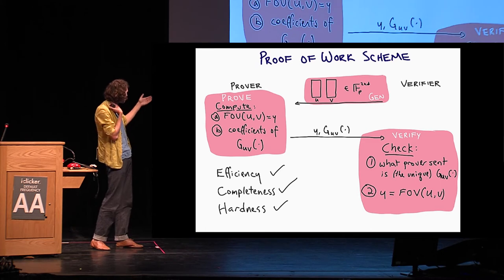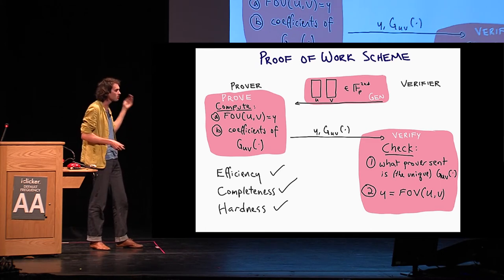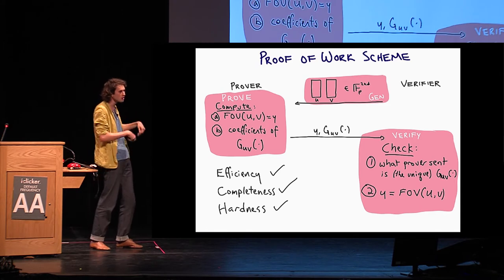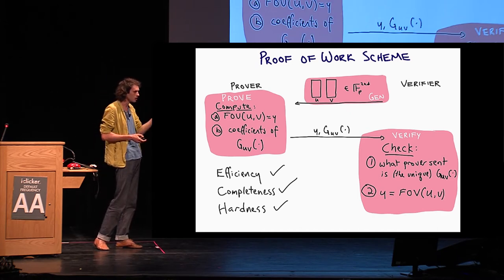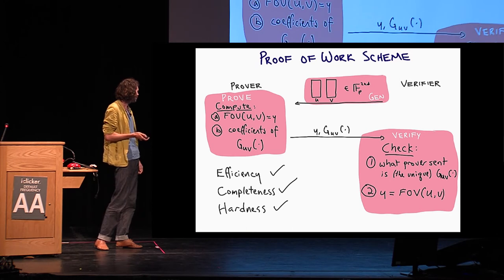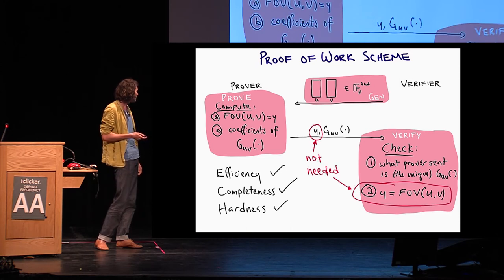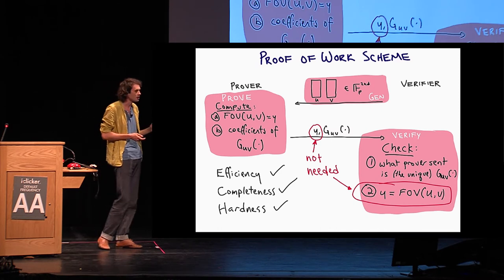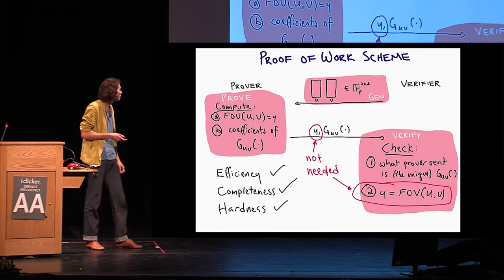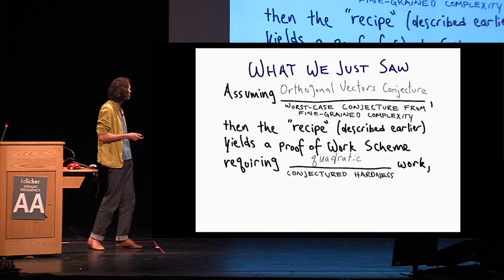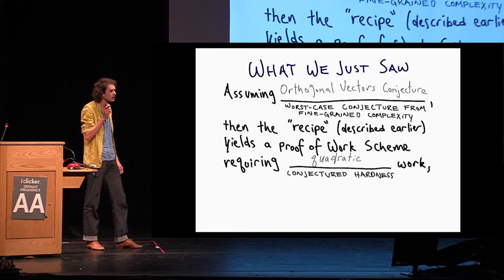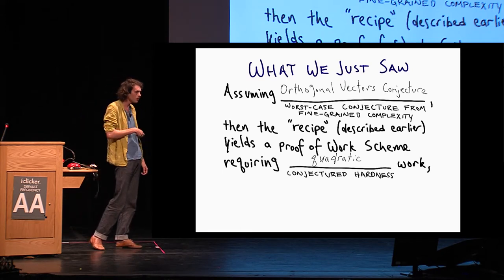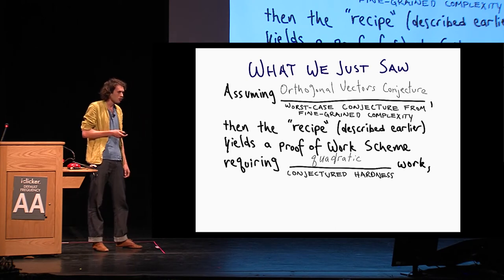It satisfies, if you believed me what I just said, it satisfies efficiency, completeness, and if you had a very efficient prover, you just can simulate the whole thing by yourself. The verifier can simulate everything by himself and breaks the earlier theorems. Finally, I should note that this Y is not actually needed in the first place. Everything will go through without it, which may be useful in a second. So what did we just see? We saw that assuming the orthogonal vectors conjecture, then the recipe that I described yields a proof-of-work scheme with quadratic work.